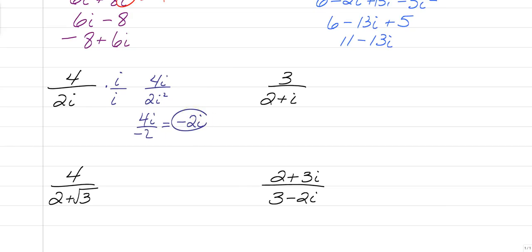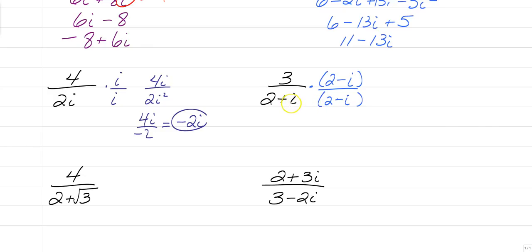When you have a plus or minus sign in between, you have to multiply the top and bottom by what's known as the complex conjugate. You're multiplying the top and bottom by the same 2 and i, but the only difference is you have to change the sign in the middle. So you're going to multiply the top by 2 minus i instead of 2 plus i. When you multiply the denominator by its conjugate, the positive 2i and negative 2i are going to cancel each other out and the i does go away.